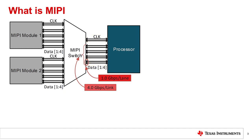MIPI is often used in personal electronics. One common use case is multi-camera systems where one processor communicates with each camera module. In this scenario, a MIPI switch is often used to control information from each module to the processor.